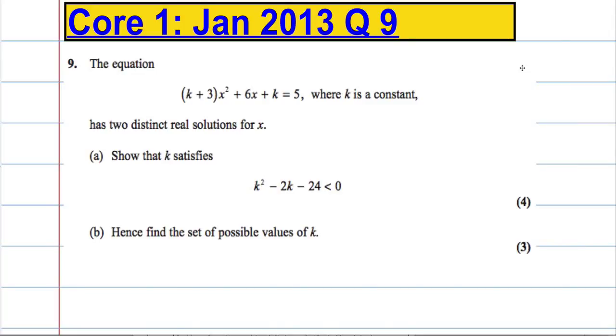Okay, so question 9. The equation (k + 3)x² + 6x + k = 5, where k is a constant, has two distinct real solutions for x.